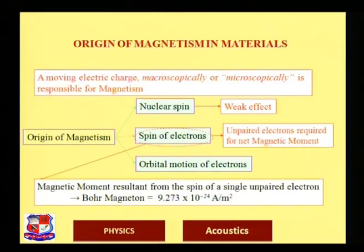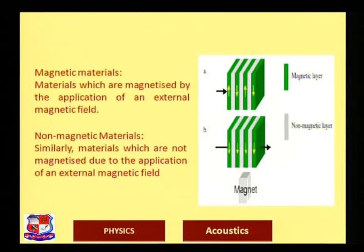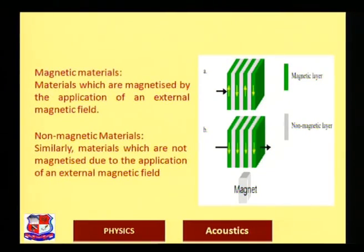The magnetic moment resulting from the spin of a single unpaired electron is the Bohr magneton — we will study it in detail at the end of the definitions. The first topic we are going to study is magnetic materials and non-magnetic materials.